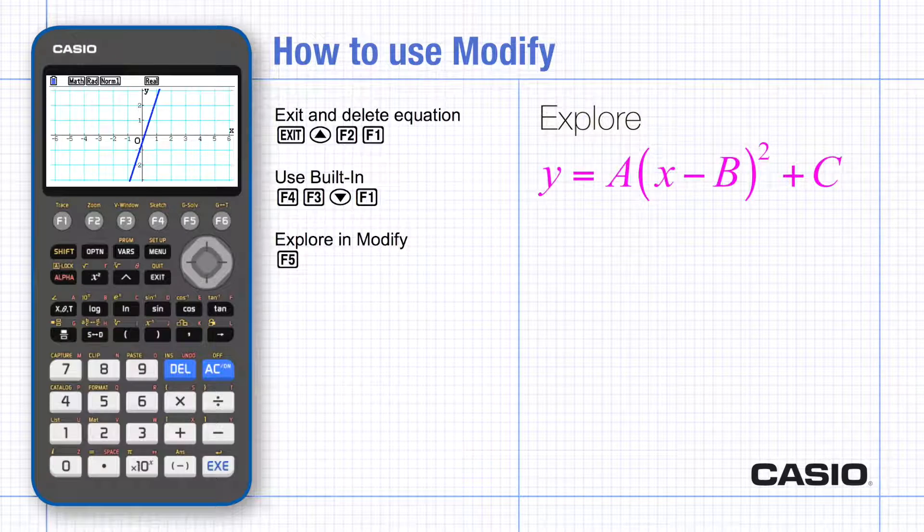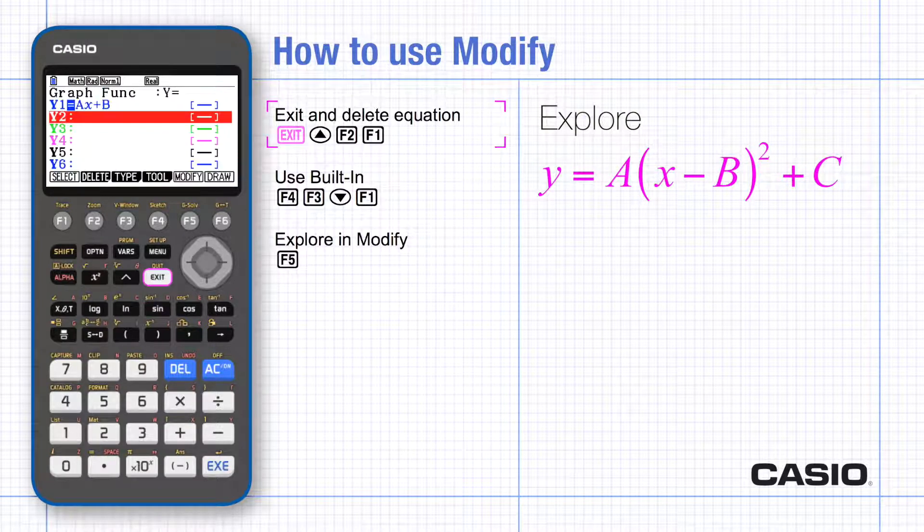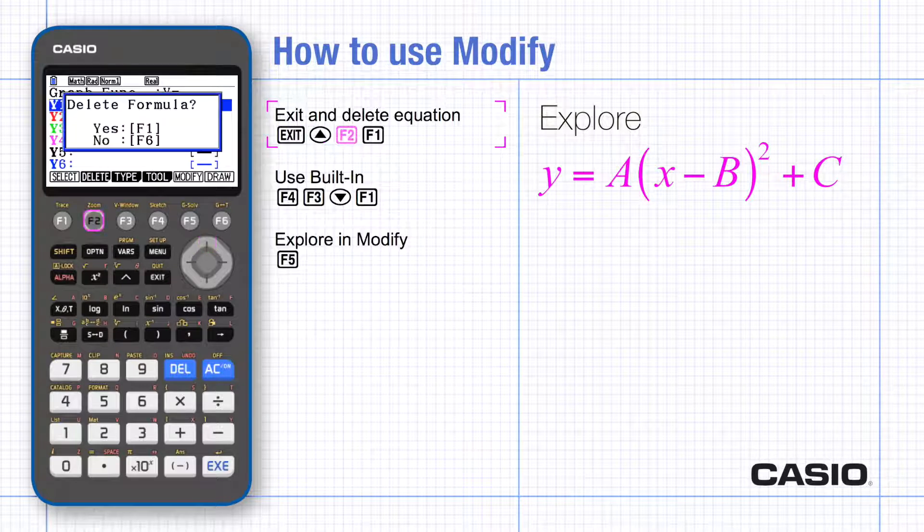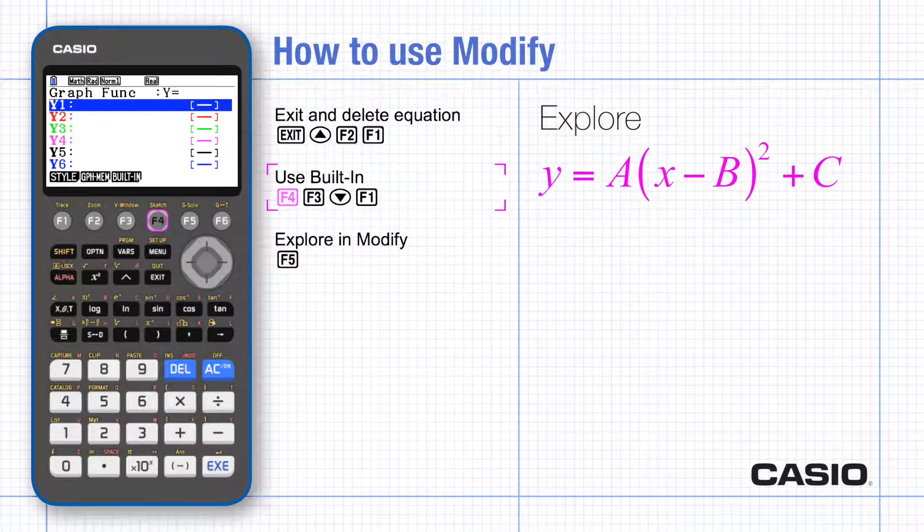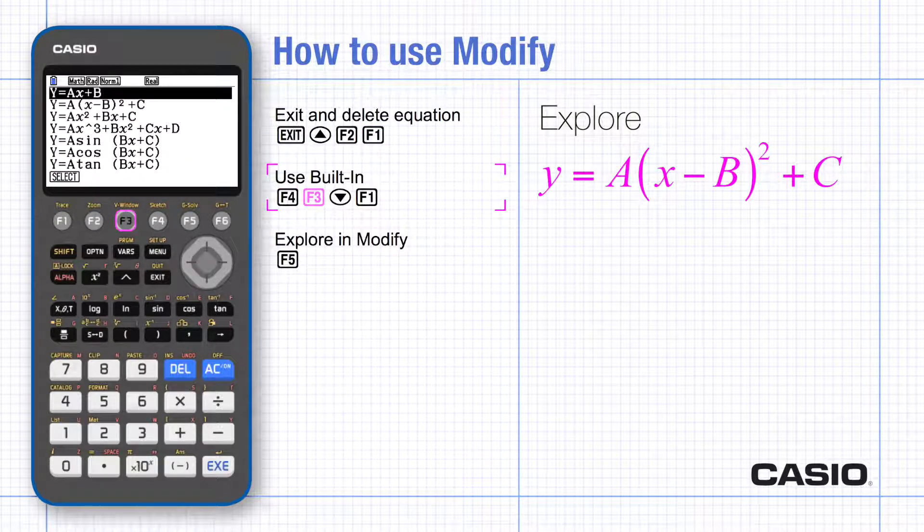If you exit and go back to the list of functions, you can delete the equation that's already there and then use the tools menu, built in, and scroll down to the completed square form of a quadratic and select.